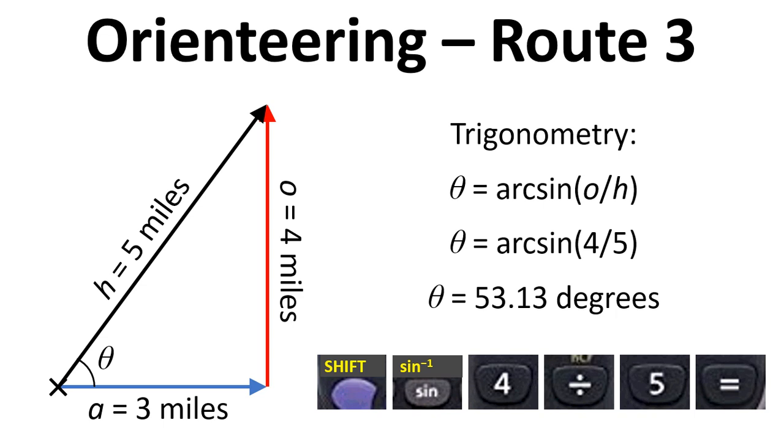Let's put this into the calculator. Often on a scientific calculator you'll need to press the shift button and then the sine button and just above that is the sine to the minus 1. You then have to of course do 4 divided by 5 and press equals and that should give you your answer.